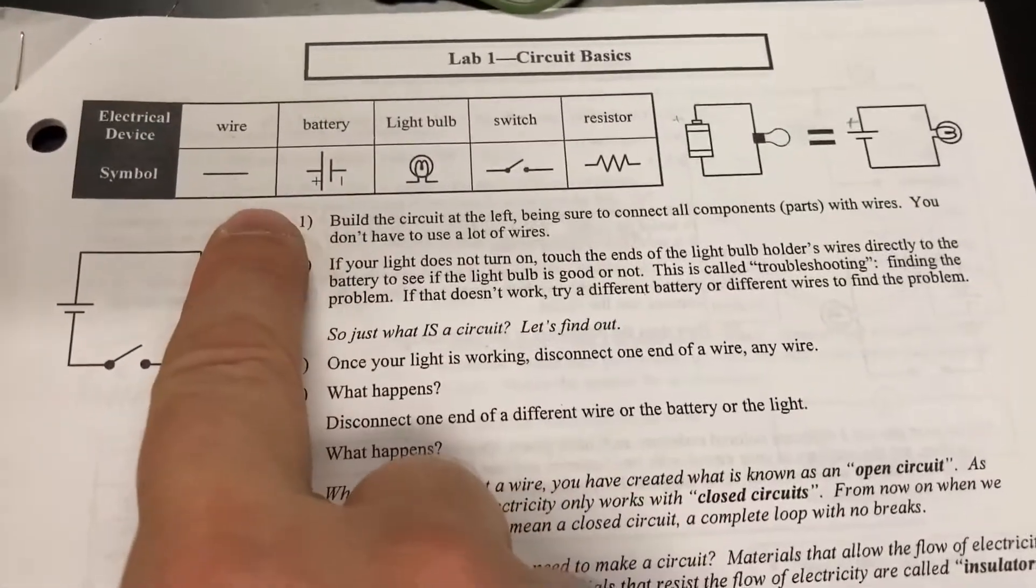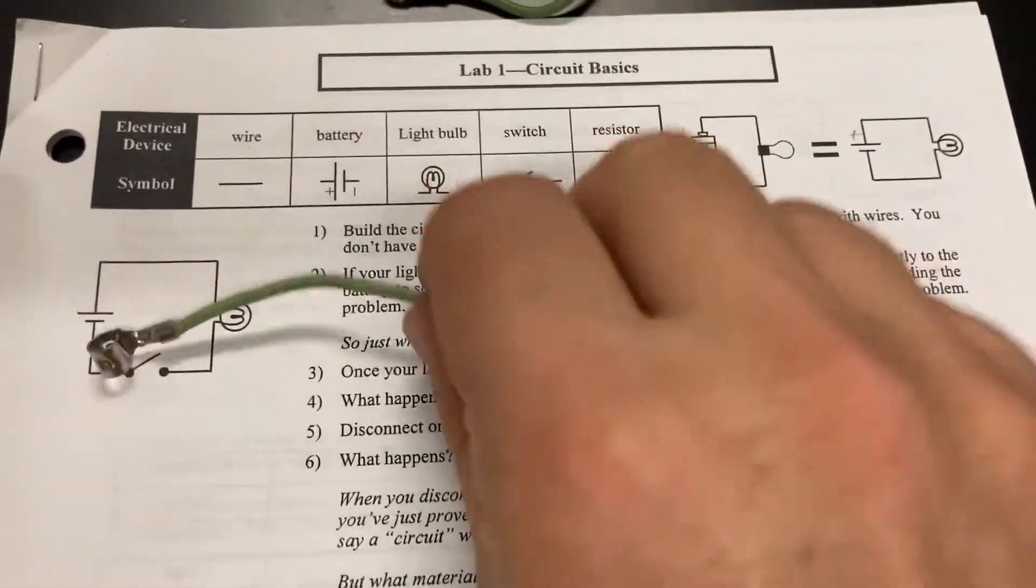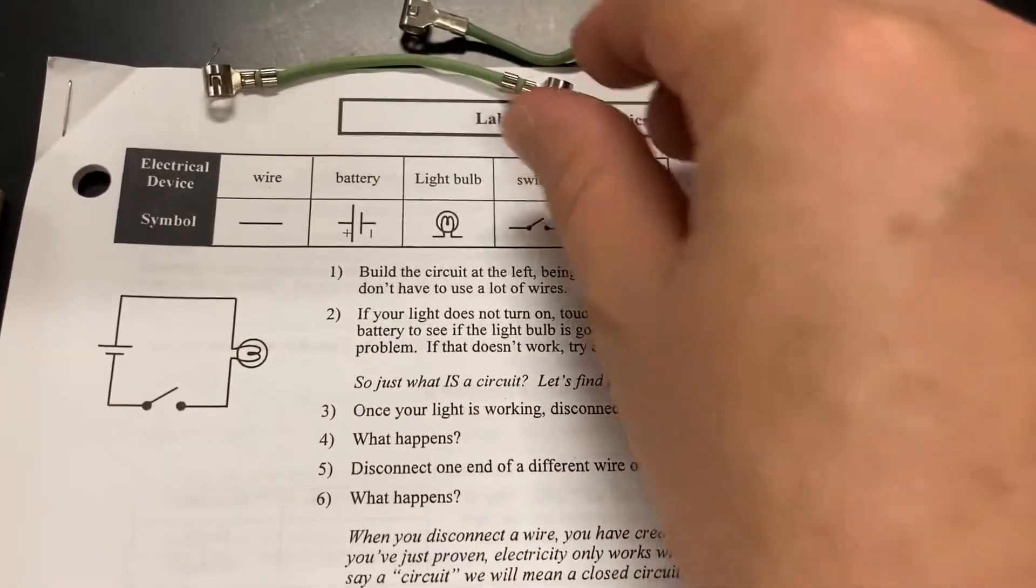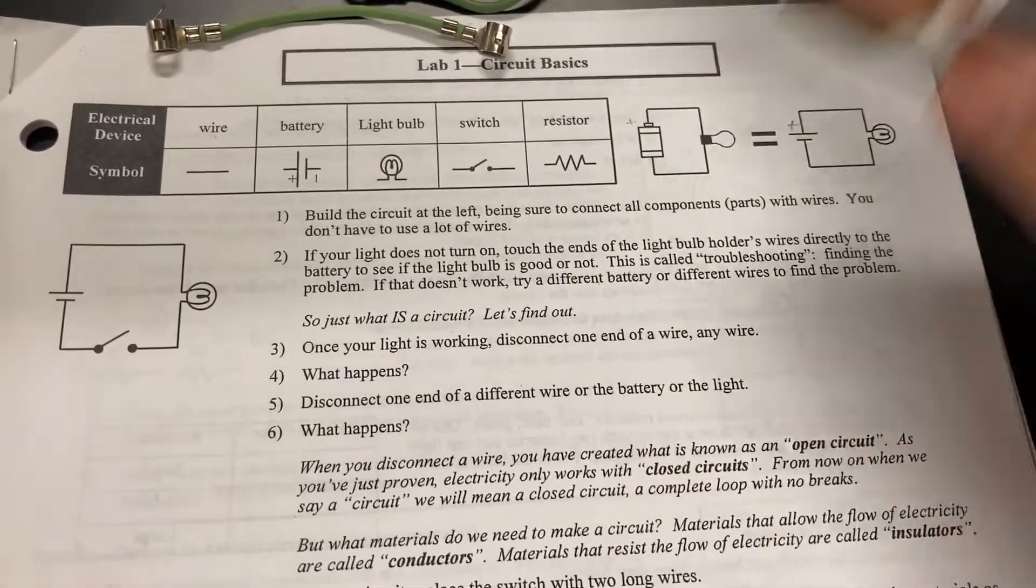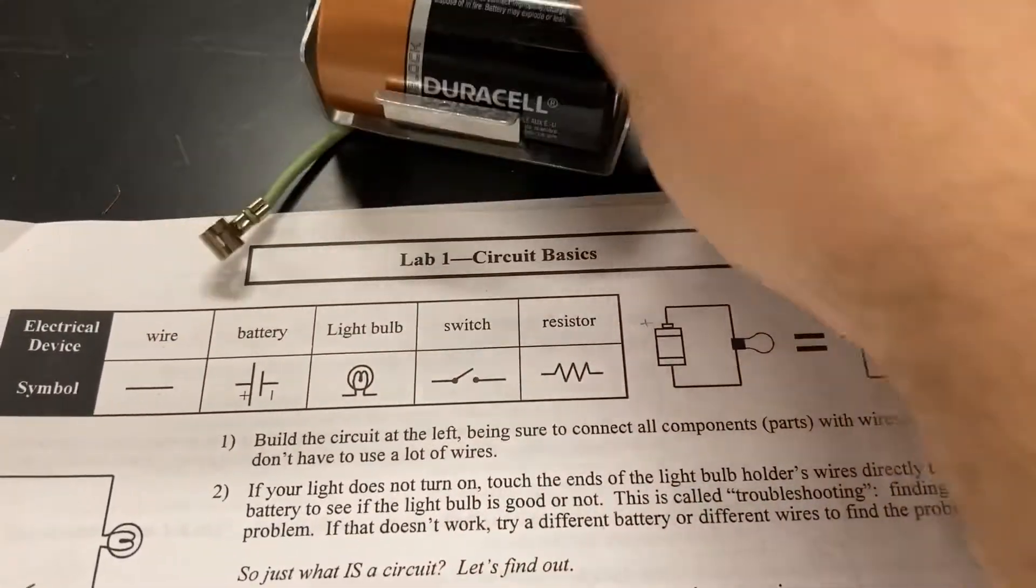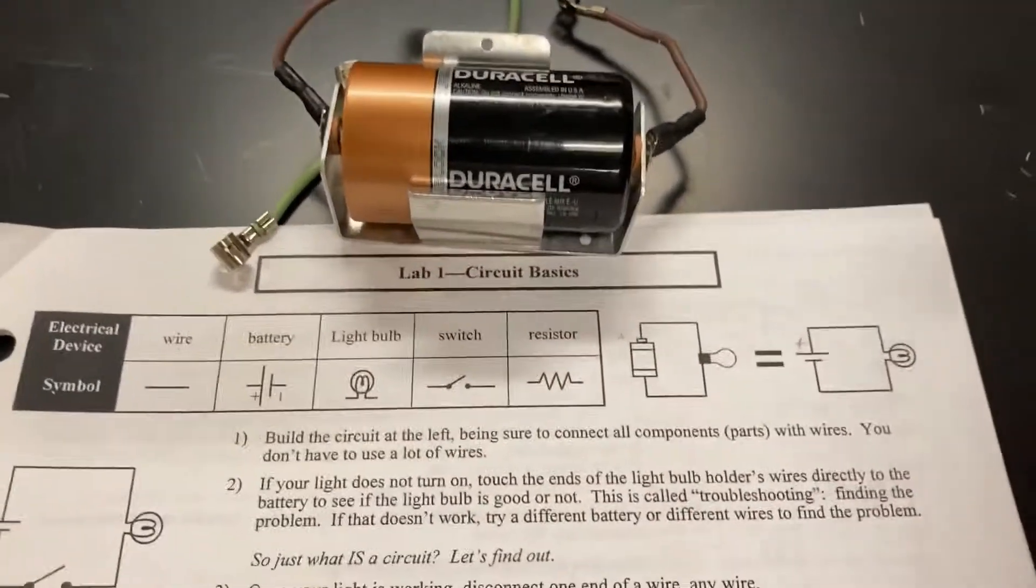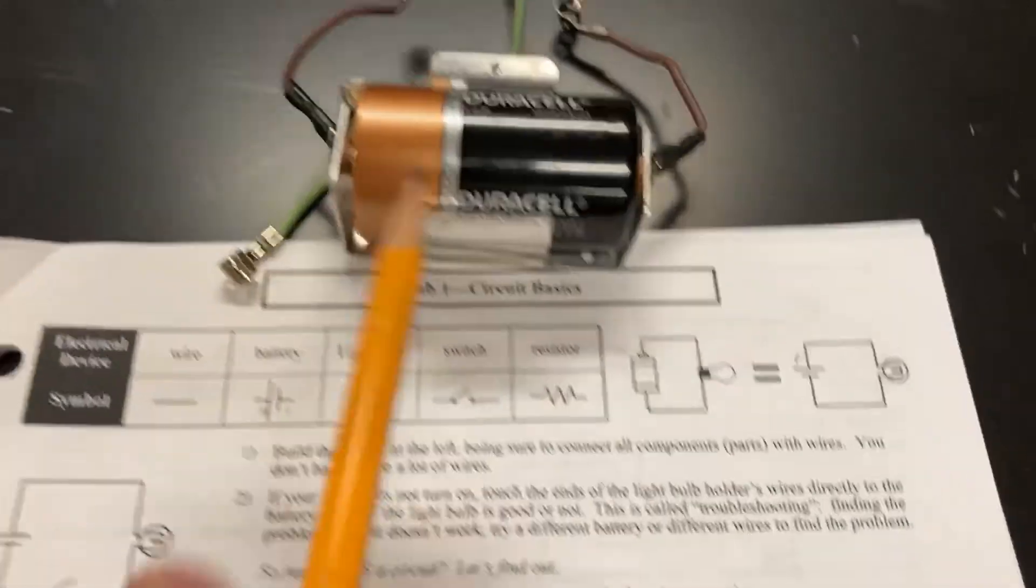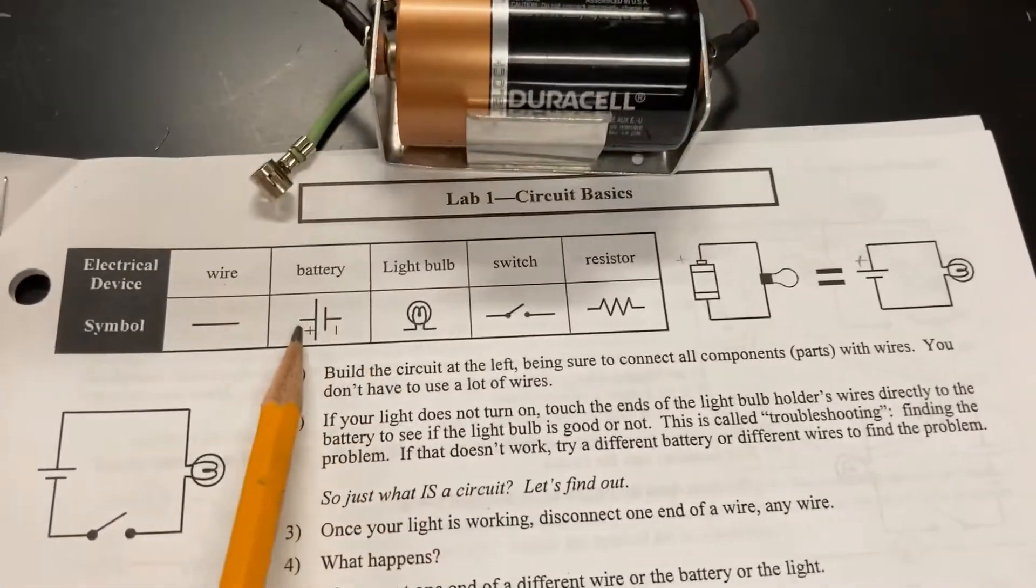So first of all, here are our symbols. A wire, which is just that, okay, a wire. Our cast of characters here, a battery. Here's our battery. Notice, though, that the drawing here, and these are just symbols to make it easier on you to draw. Notice the bumpy side of the battery, right, is the long end.